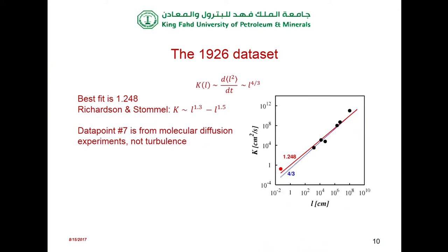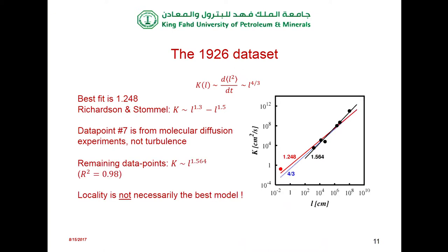I note that one of the data points, if you go back to the original paper, comes from molecular diffusion experiments — it has nothing to do with turbulence at all; it's laminar flow, from molecular diffusion. So I thought: let's remove this point, it's an outlier. And all of a sudden, these six remaining points fall nearly on a perfect fit, and you get a slope of 1.567, which is actually beyond even what Richardson and Stommel suggested.